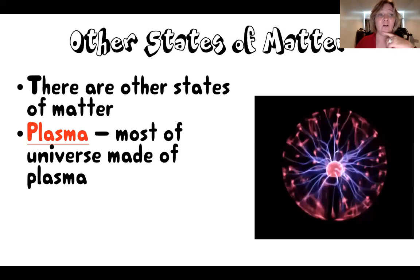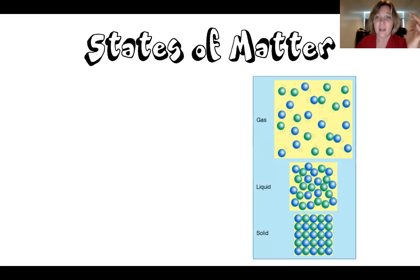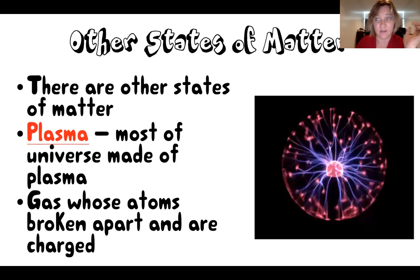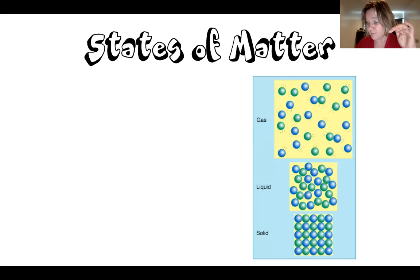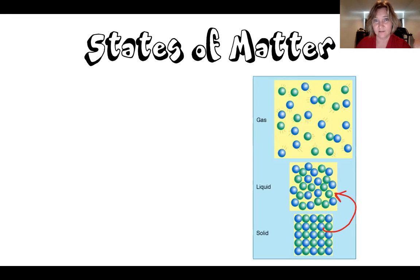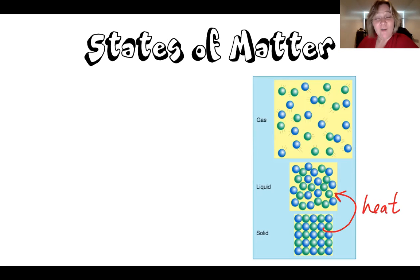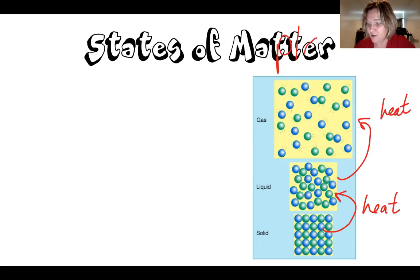There is one more state of matter called plasma, which makes up most of the universe — not the same thing as a plasma TV. Real plasma is when gas atoms have so much energy that the electrons get ripped off the atom. Thinking about how you get from one state to the next: to turn a solid into a liquid you need heat, to change a liquid into a gas you need heat, and to change a gas into plasma you also need heat.